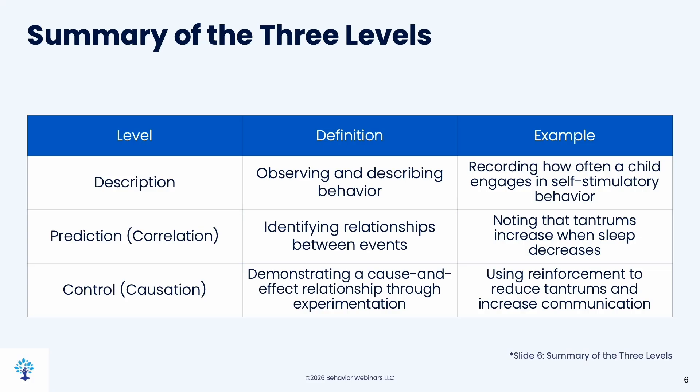And then prediction, which is a correlation, we're going to observe two things and see if they change at the same time. So either maybe one changes, one goes down, or maybe they both go up, or maybe they both go down. So noting that tantrums increase when sleep decreases, I'm going to measure how much a child sleeps every night. And then I'm going to measure how many tantrums they have every day. We can't say there's a cause, but we can say there's a correlation. And then maybe we can play with some sleep interventions to see if we can increase sleep and decrease tantrums.